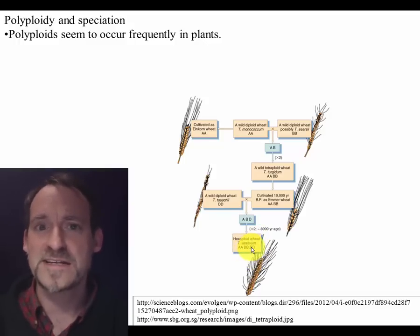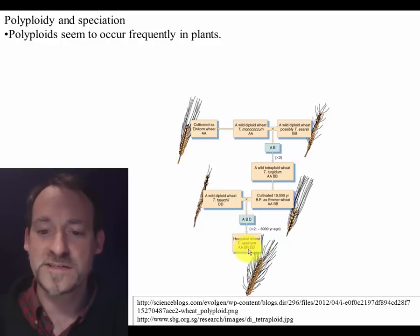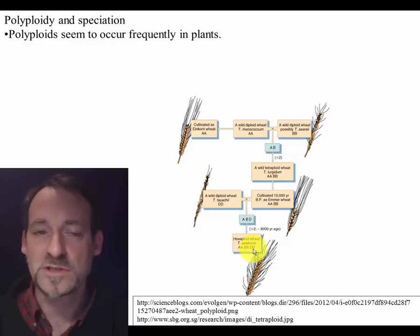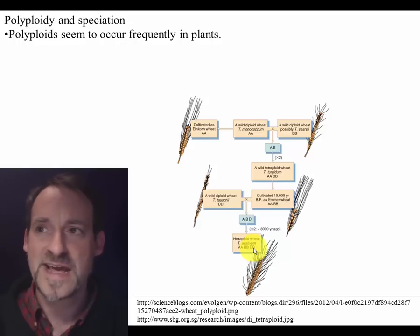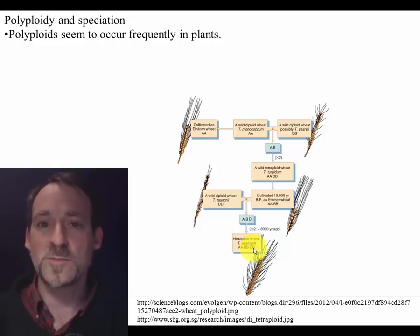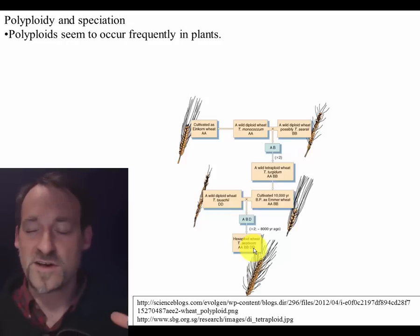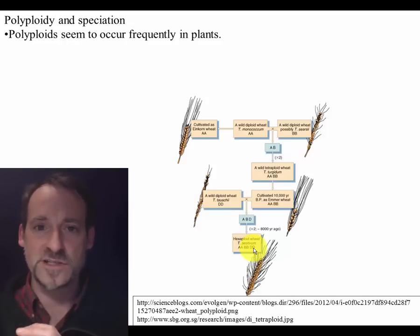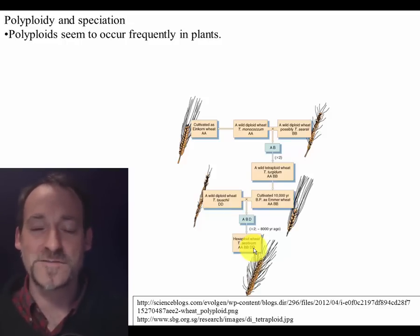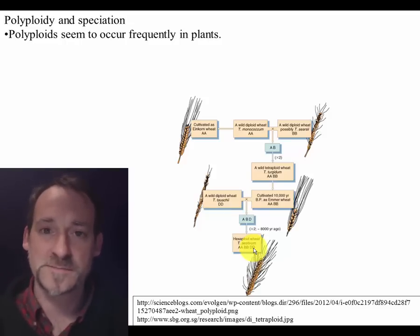Triticum aestivum is descended from three different parent species that were totally reproductively isolated. Now the genome of each one of those species — all three genomes — are mashed together into the nucleus of every cell of domesticated wheat.